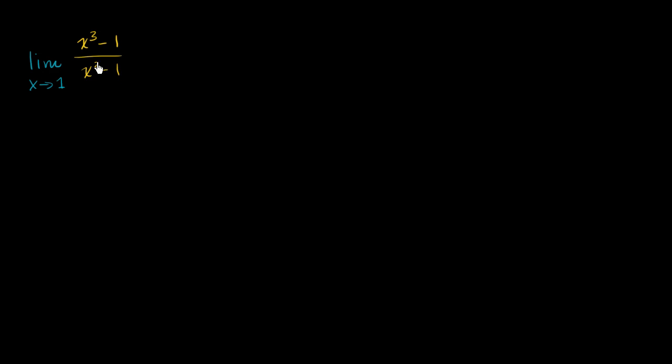So let's see if we can try to simplify this in some way. You might immediately recognize, let's rewrite this expression. So it's x to the third minus 1 over x squared minus 1. This, on the bottom, immediately jumps out as a difference of squares. So we know on the bottom that this could be factored as x minus 1 times x plus 1.